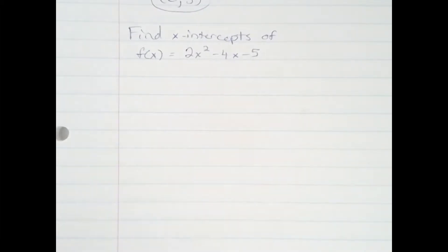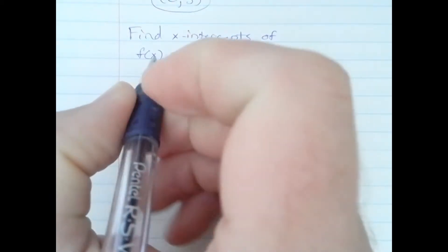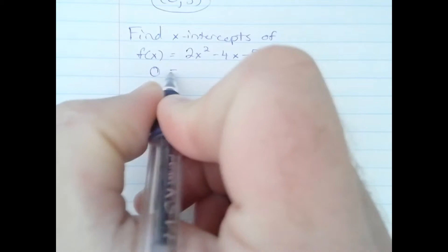Alright, we're finding the x-intercepts of a quadratic. To find the x-intercepts, it's the same as plugging 0 in for y and solving for x.